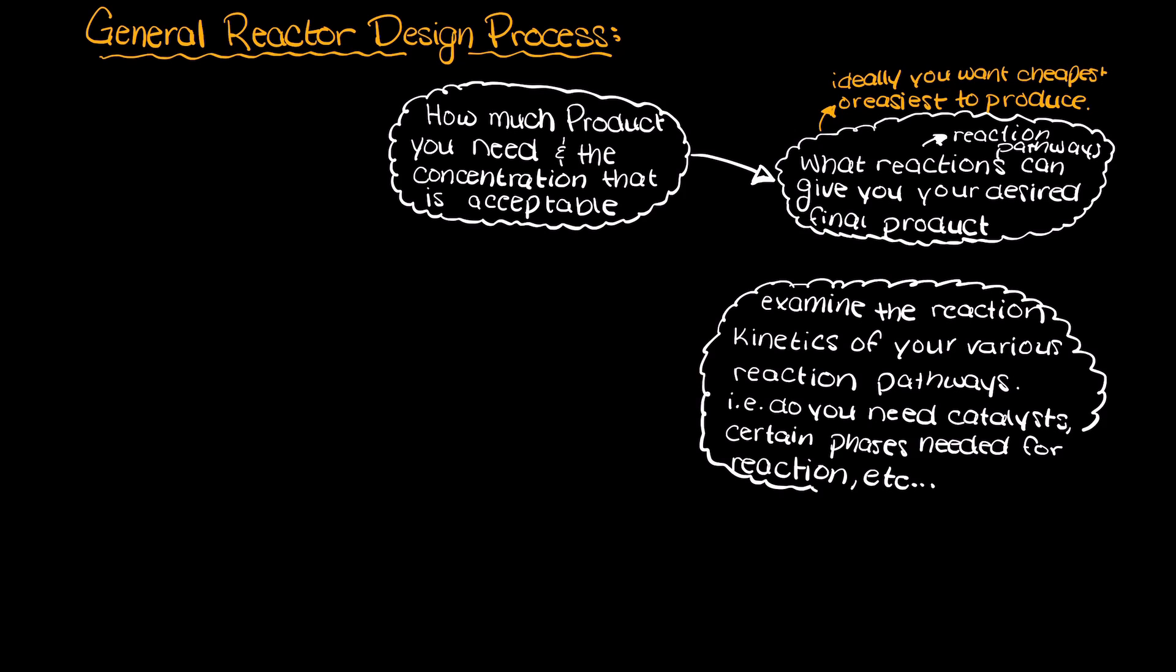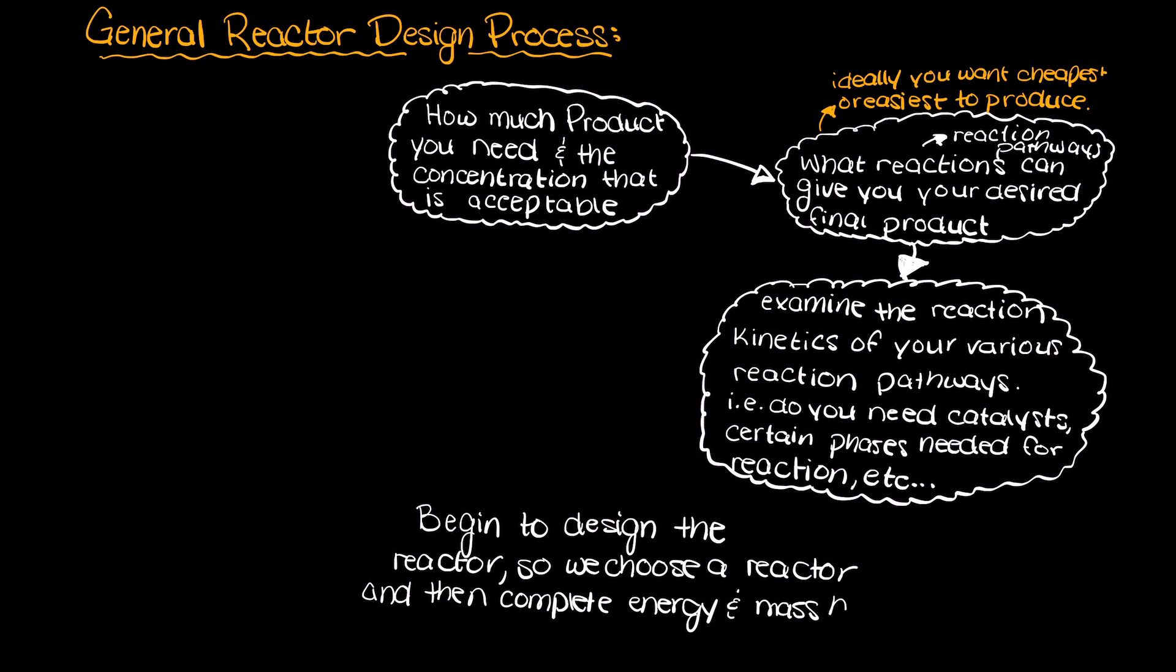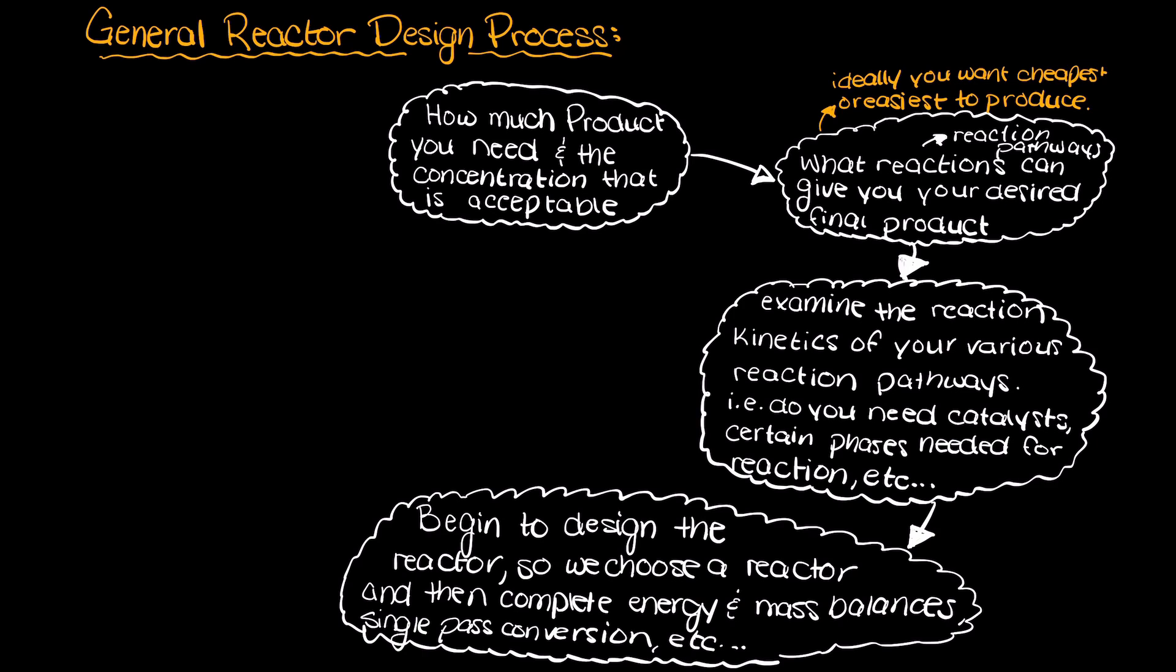Now that we have an understanding about what our reaction looks like and the conditions it needs, we can begin to design the actual reactor. This is done through completing energy and mass balances, examining the single pass conversion, so how much of your reactants actually converted to the product upon one pass through your reactor, and the size of our reactor. Things like that.